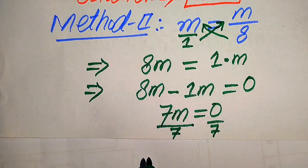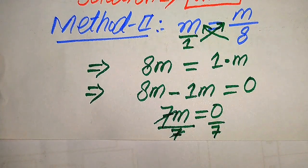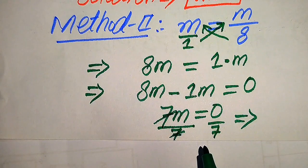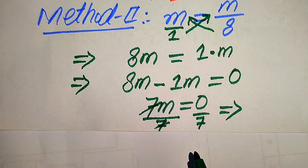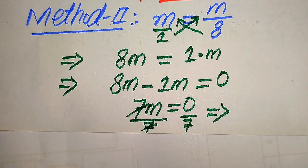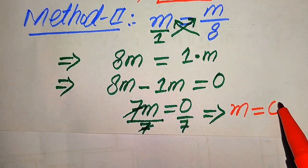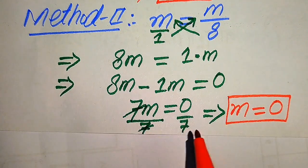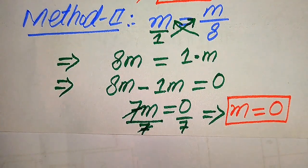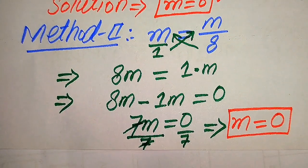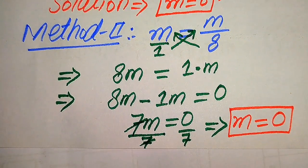We divide both sides by 7 — the 7s cancel — and 0 over 7 equals 0, so m equals 0. We already verified m equals 0 in the first method. From both methods we get the same final answer: m equals 0. Thank you so much for watching this video. Please subscribe to my channel for more exciting videos.